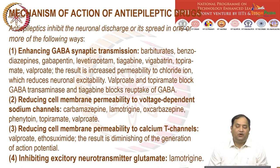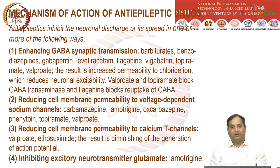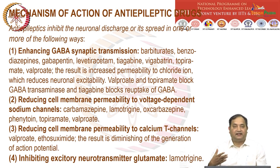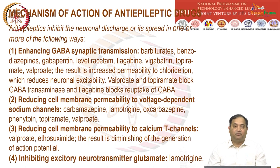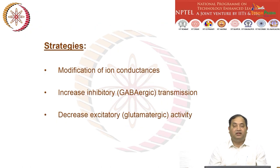Most anti-epileptic drugs act through GABA synaptic transmission. Drugs like barbiturates, benzodiazepines, and gabapentin bind to GABA receptors, increasing chloride channel entry into the cell, causing hyperpolarization and inhibition — that is how they exert anti-seizure activity. Other drugs reduce cell membrane excitability through voltage-gated sodium channels — blocking these controls seizure. Similarly, calcium channel blockade is used. Lamotrigine inhibits the release of excitatory neurotransmitter glutamate.